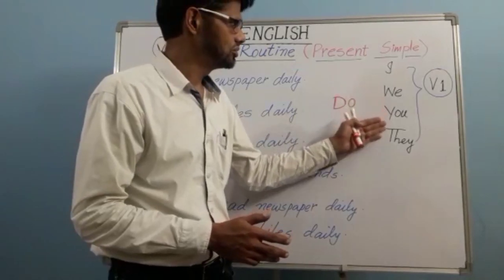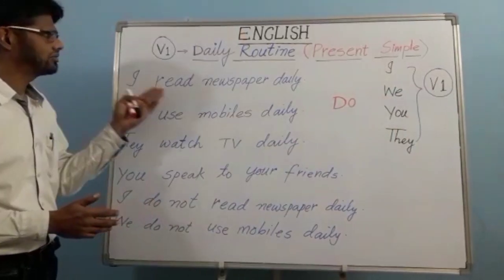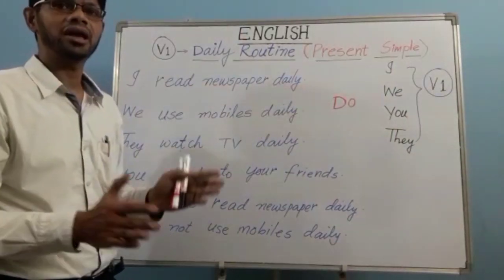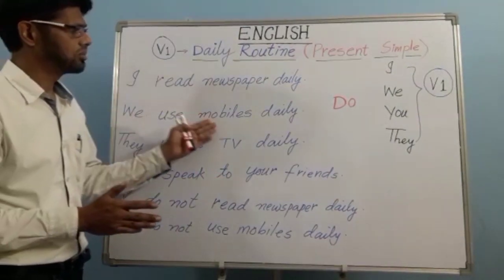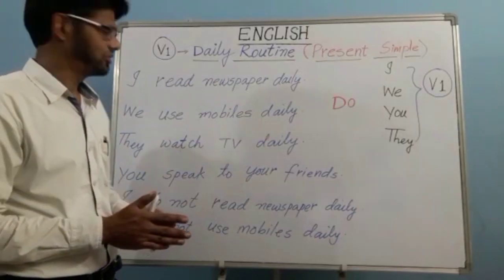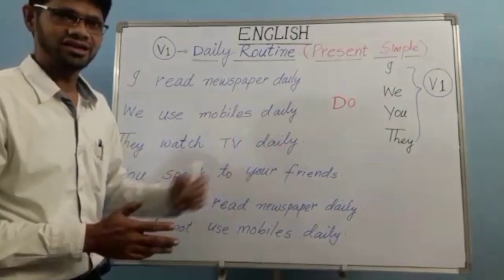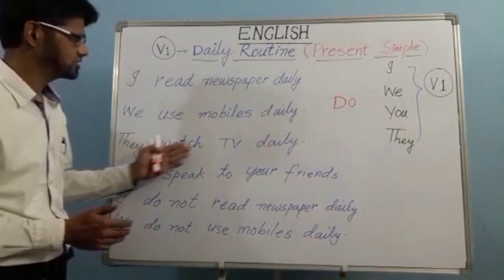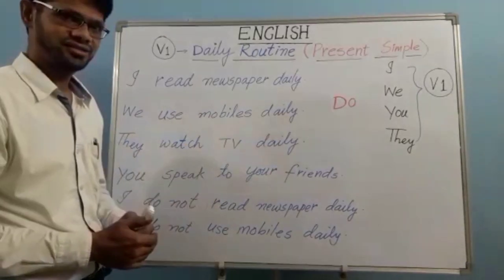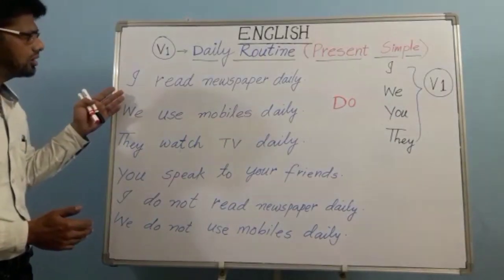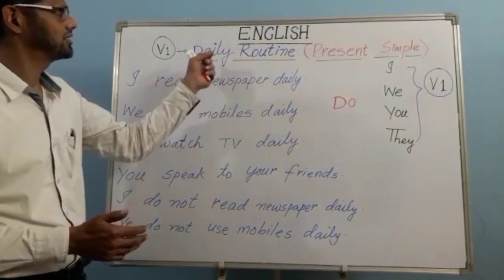For example: I read newspaper daily — it is my habit. We use mobiles daily. They watch TV daily. You speak to your friends daily. From all these sentences, we can get the information that they describe daily routine actions.